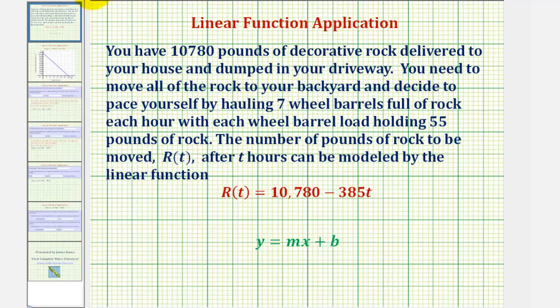The linear function may also be given in slope-intercept form as R(t) = -385t + 10,780. These two linear functions are equivalent. Notice how the y-intercept is 10,780 and the slope is negative 385.